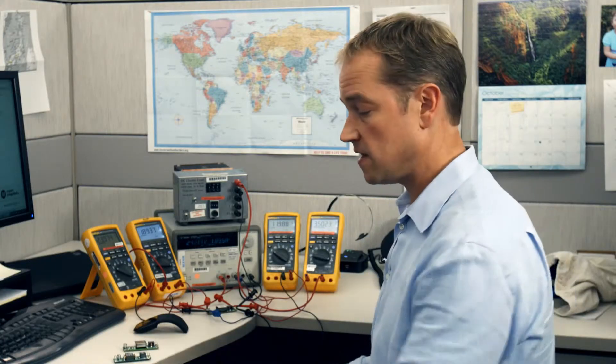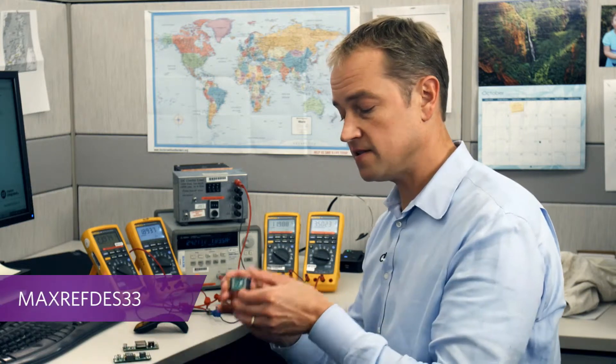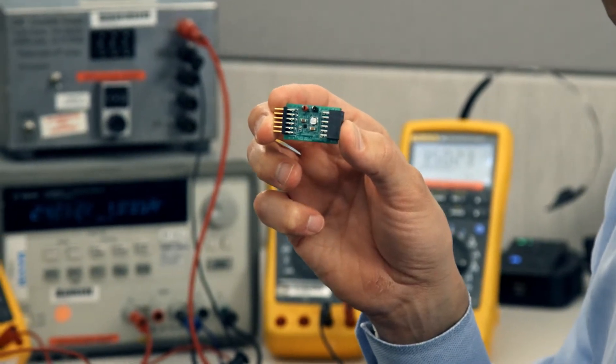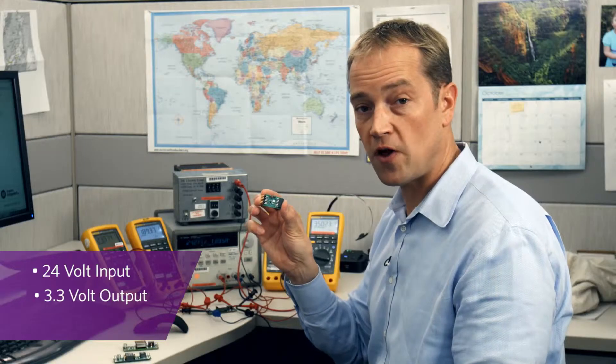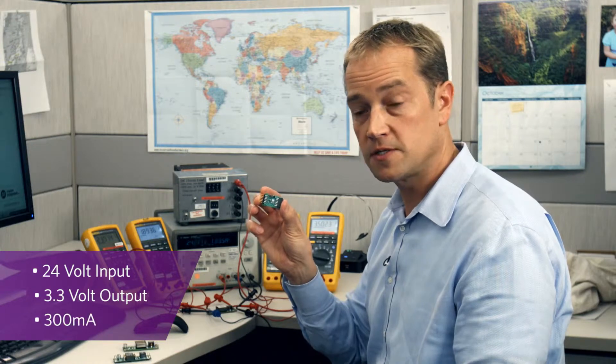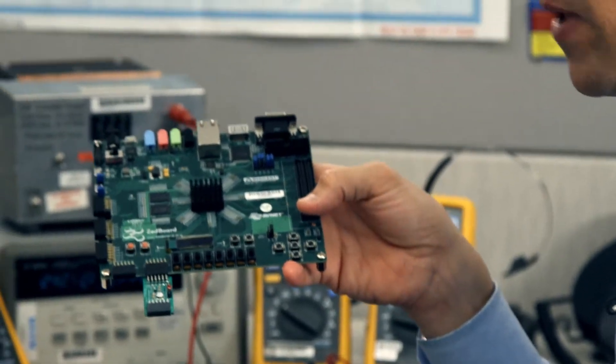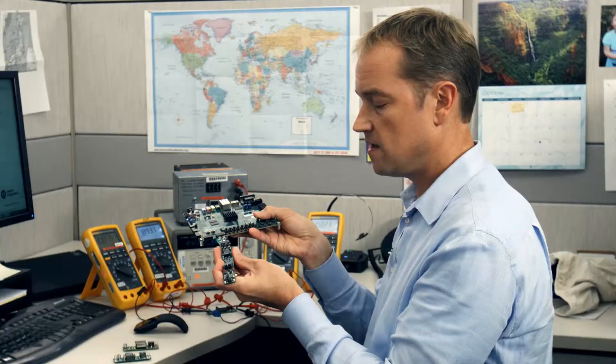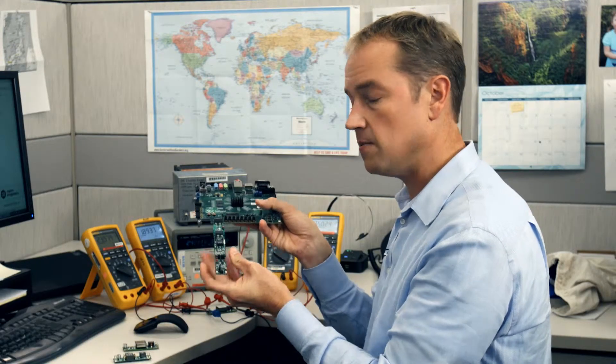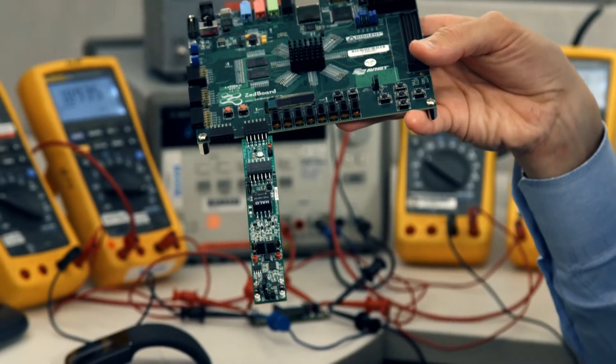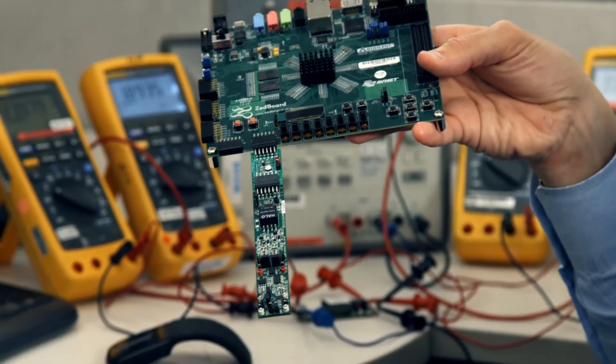The second design that I'll tell you about today is MaxRefDes 33. This is a smaller design that also takes in 24 volts and provides a 3.3 volt output at 300 milliamps. This reference board is equipped with PMOD connectors, so it can be plugged into any platform board that's also PMOD equipped, and it provides a connection for whatever PMOD equipped subsystem you want to evaluate. You can run this system while still running 24 volts to it, as is the voltage that we find in industrial systems.